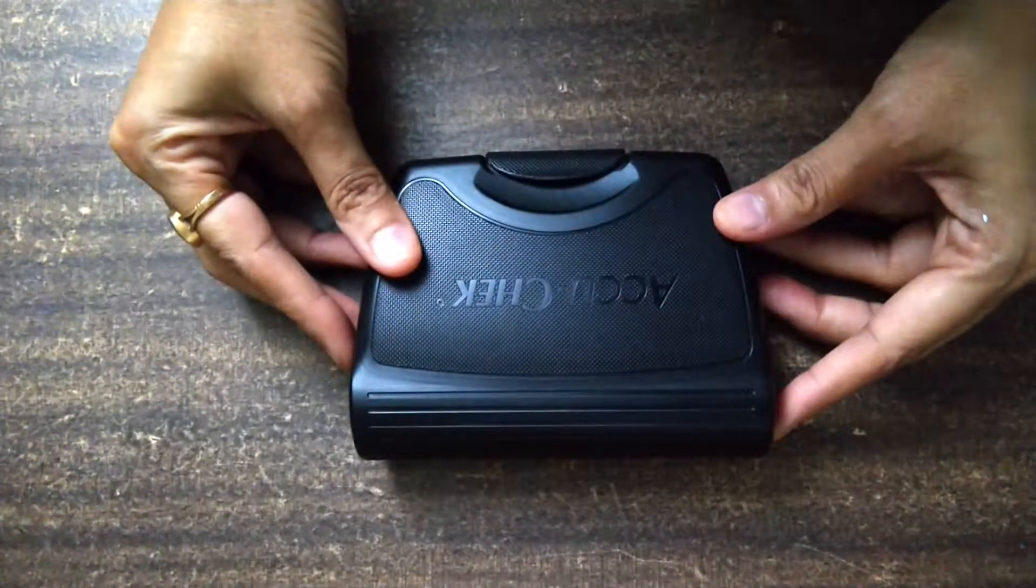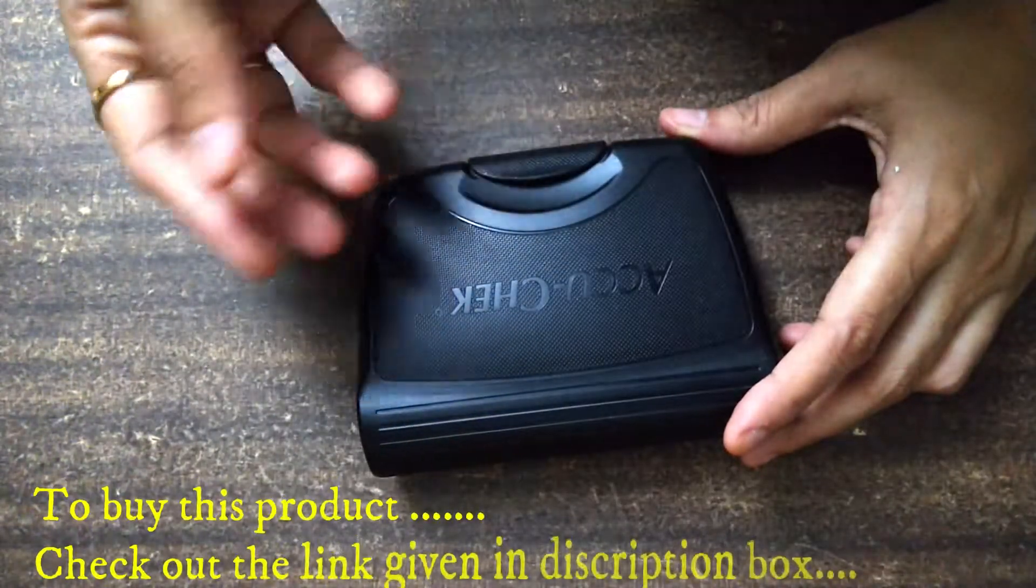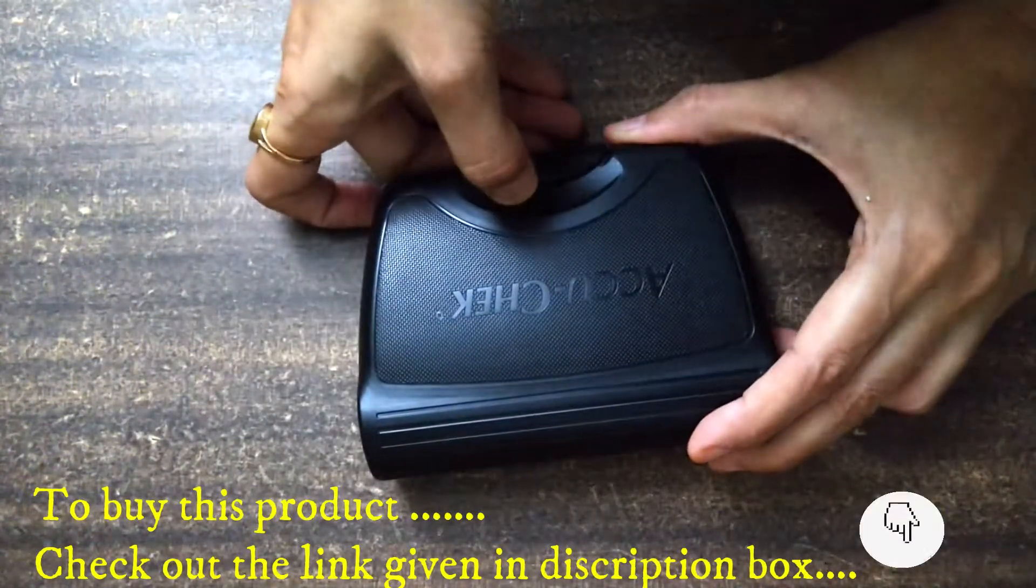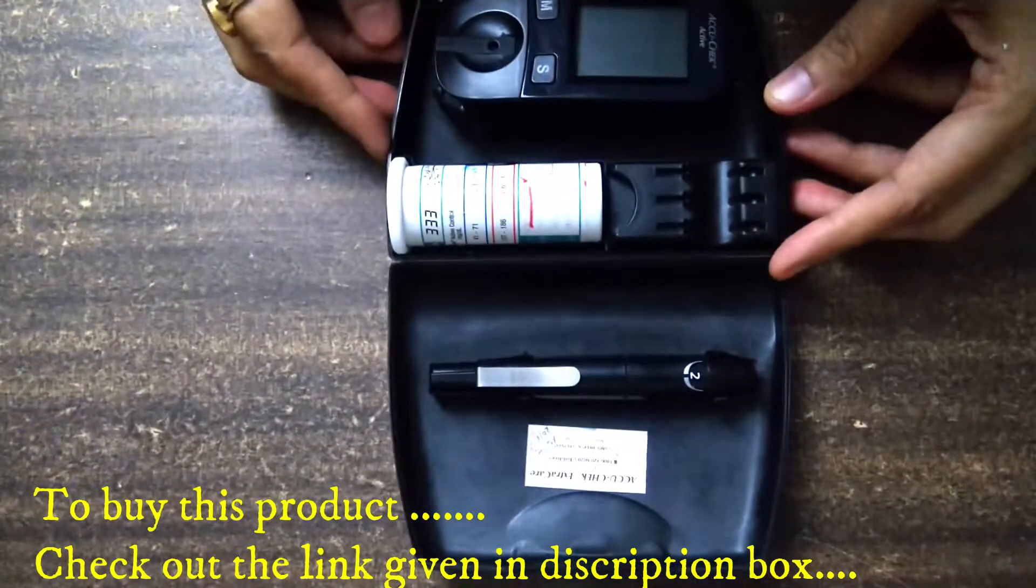This is our AccuChek device. You have to test it twice a day. One is fasting and the second time you have to eat it. So I am going to tell you how to use it and what parts are in it.